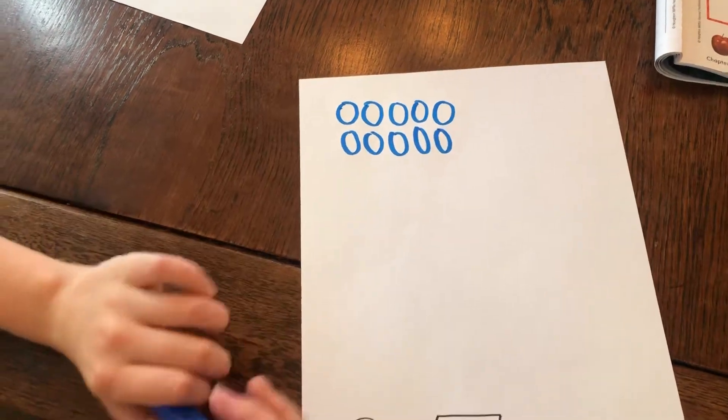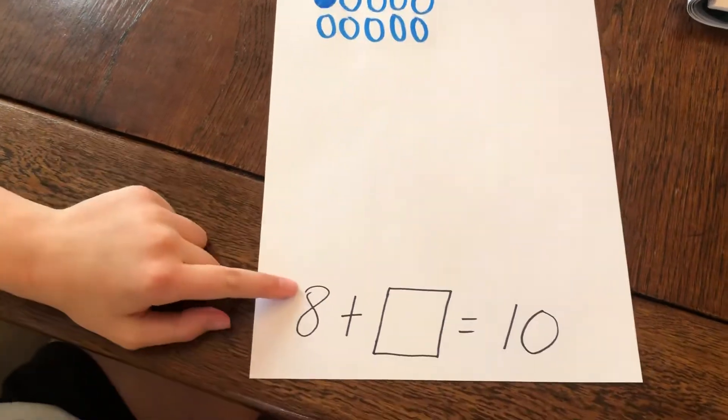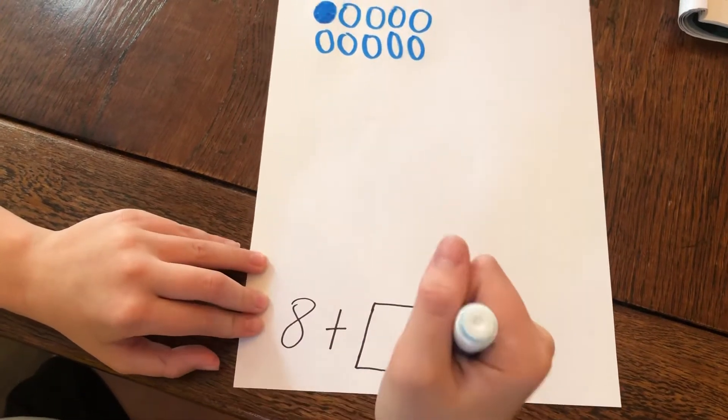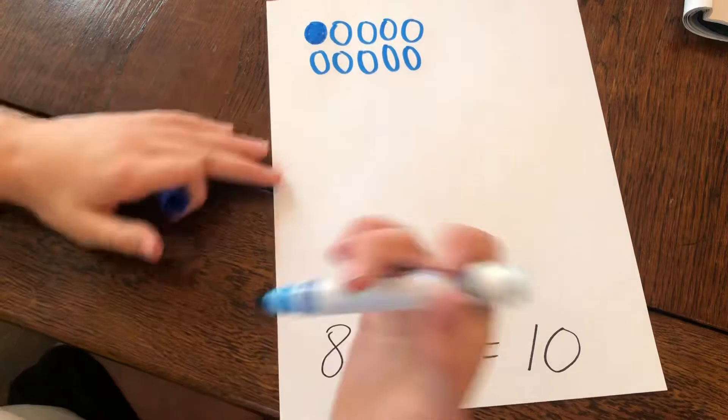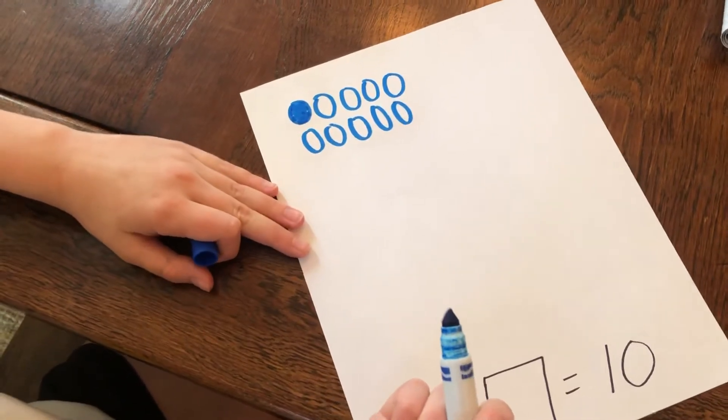Now we're going to color in 8 of these. Why are you coloring in 8? Well, I'm coloring in 8 because that's the first piece I know. Because it says 8 plus blank equals 10. Oh, so 8 is one part you know of 10. And you're going to color in those 8 to see what the other part is?